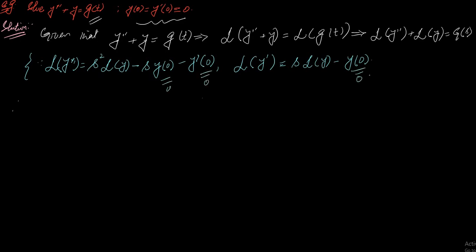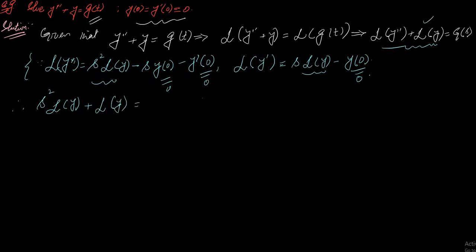Therefore we get s squared times L{y} — the first two terms — plus L{y} equals G(s). So L{y} equals 1 over (1 plus s squared) times G(s).